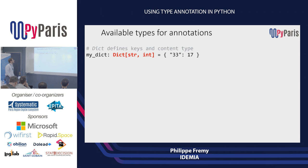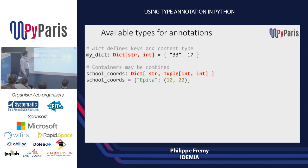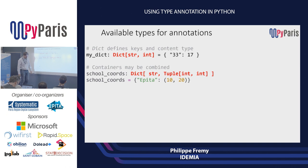For a dictionary, the syntax is also imported from the typing module. You specify the type of the key — here a string — and the type of the content — an integer. Of course you can combine everything. For example, 'school_coordinates' can be declared as a mapping from a name to a tuple of two integers. Here I'm just doing the declaration, and then I assign it: name of the school and some coordinates.